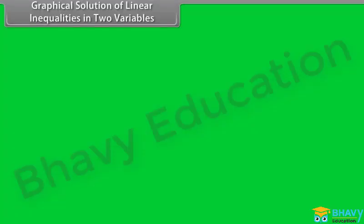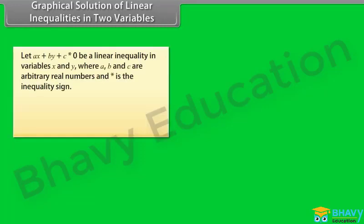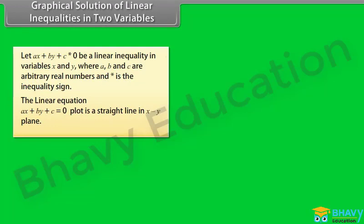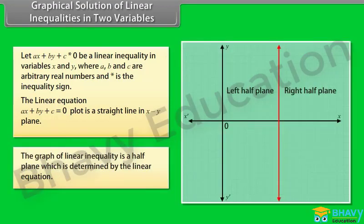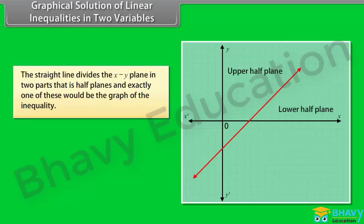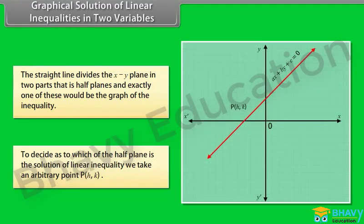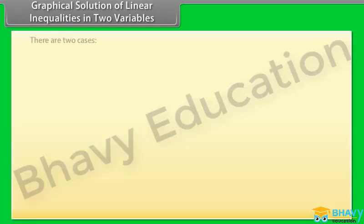Graphical solution of linear inequalities in two variables. Let Ax plus By plus C star 0 be a linear inequality in variables x and y, where A, B, and C are arbitrary real numbers and star is the inequality sign. The linear equation Ax plus By plus C equals 0 plots as a straight line in the xy plane, which divides the xy plane into 2 half planes. The graph of a linear inequality is a half plane determined by the linear equation. To decide which half plane is the solution of the linear inequality, we take an arbitrary test point P(h, k). There are two cases.